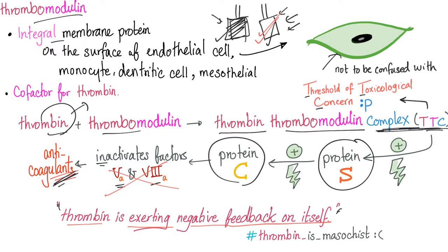Now, look at the magic. Let's talk about heparin for a second. Heparin works by activating antithrombin 3, which then inactivates thrombin as well as factors 9, 10, 11, and 12. So heparin just applied the brakes — with heparin, you get less coagulation. Now notice the miracle called thrombomodulin: it converted thrombin into the TTC complex, which inhibits coagulation. Thrombomodulin applied the brakes while releasing the accelerator simultaneously.